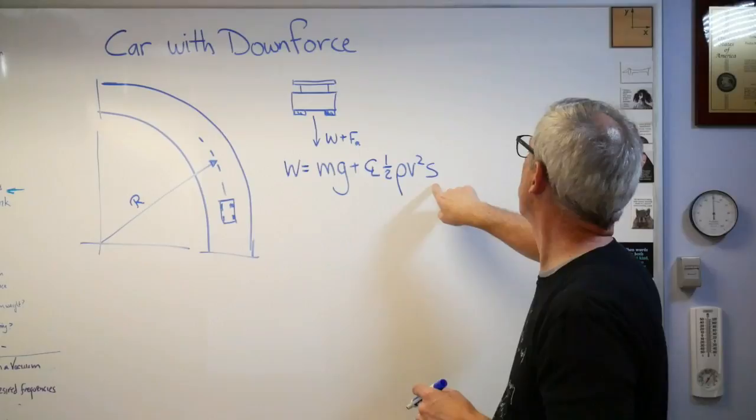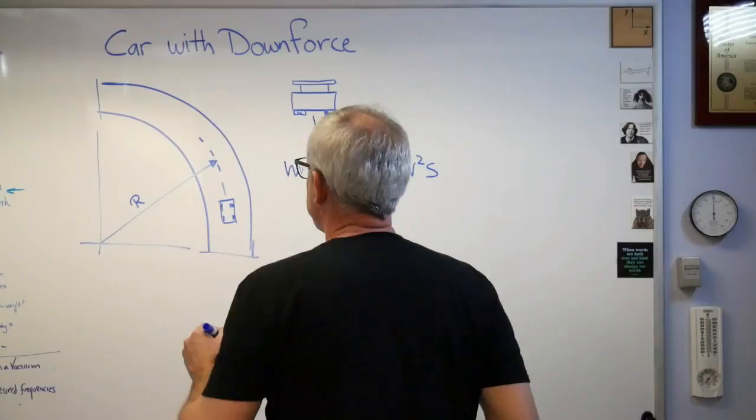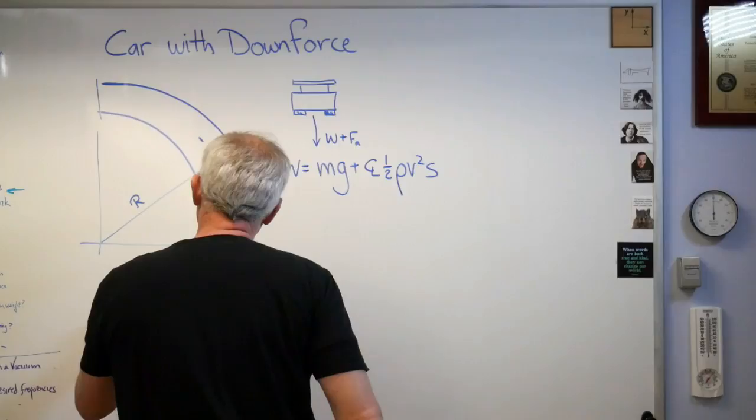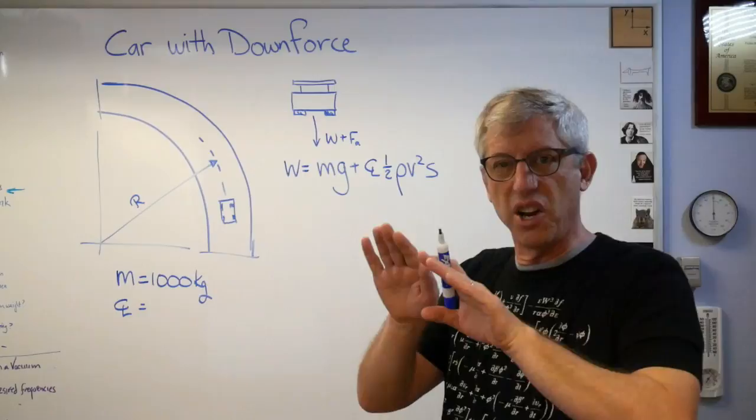Let's put some numbers on this. Let's make the mass equal a thousand kilograms. That's a little heavy for a race car but not too bad. Coefficient of lift, well these things can be pretty high lift because you always know exactly what angle the thing makes with the air. It's not like an airplane where the angle changes. Let's make this 1.5. You can change these numbers later if you don't think these are right.